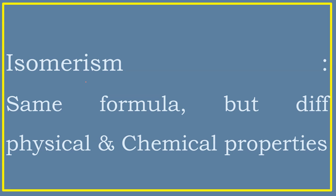What is isomerism? It can be defined as compounds which have the same formula but differ in physical and chemical properties. Many carbohydrates share the formula C6H12O6 — the same formula as glucose as well as fructose. Glucose and fructose are functional isomers: glucose contains an aldehyde group and fructose contains a ketone group. Apart from functional isomerism, carbohydrates also exhibit stereo isomerism and optical isomerism.